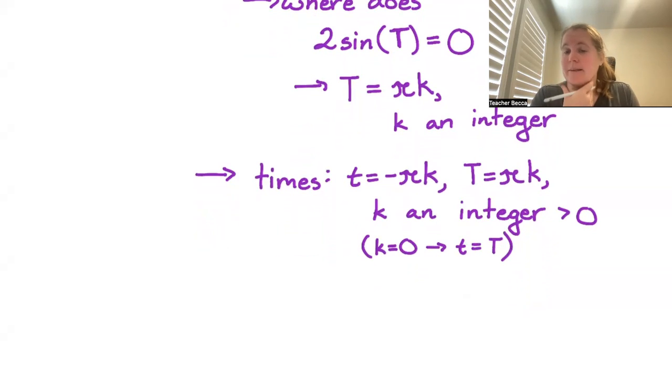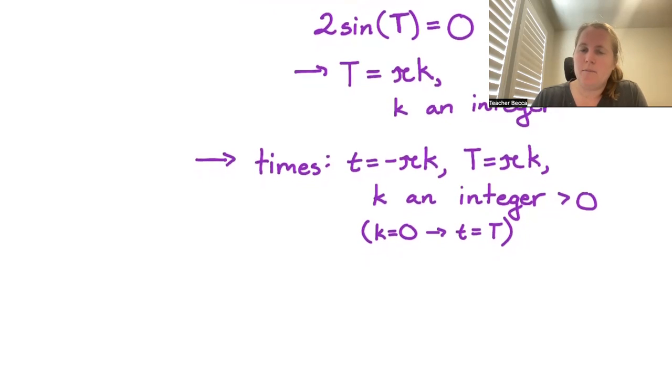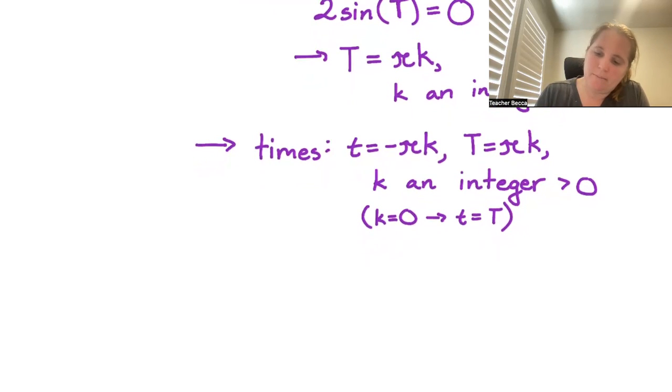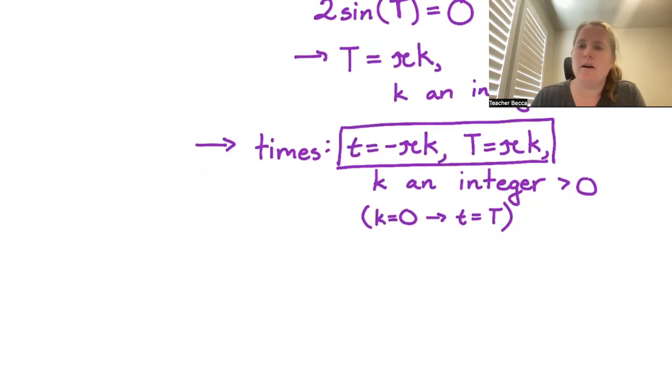If we use k equals a negative integer, it's just a swapped pair. So since we have the negative and positive version, we have our paired times of where we match.